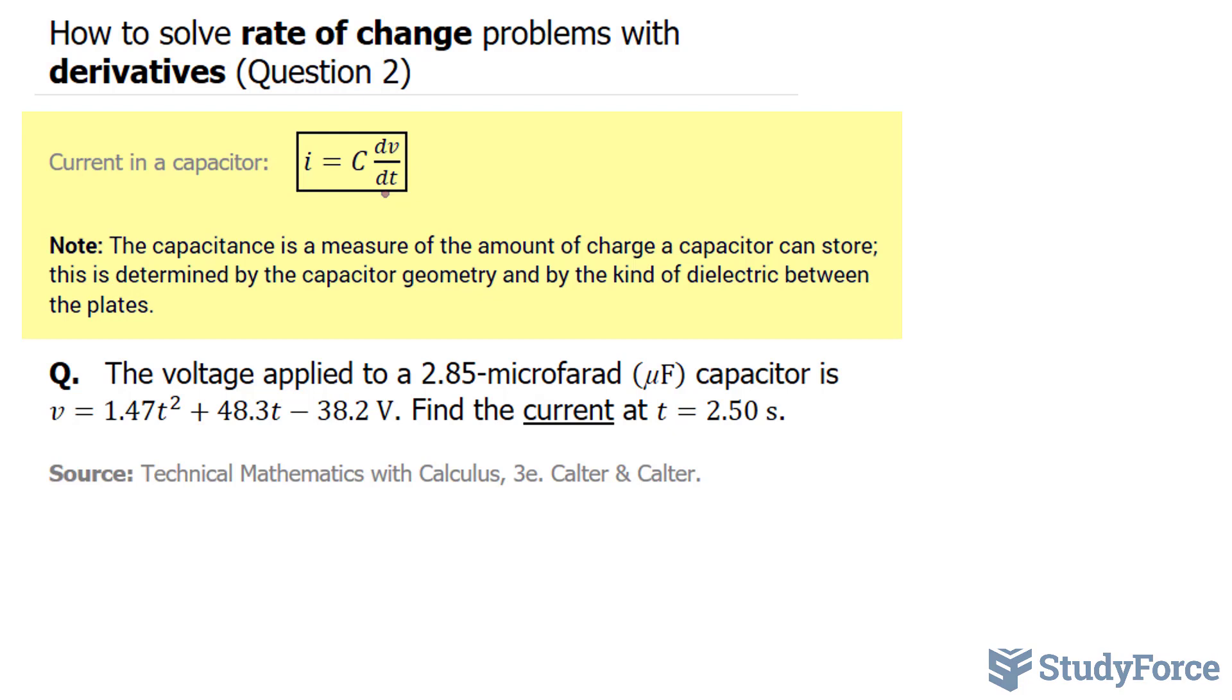In case you're not familiar with capacitance, capacitance is a measure of the amount of charge a capacitor can store. This is determined by the capacitor's geometry and by the kind of dielectric between the plates.